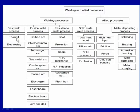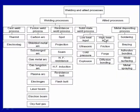Cast welding processes involve thermite welding and electroslag welding. Fusion weld processes include carbon arc, shielded metal arc, submerged arc, gas metal arc, gas tungsten arc, plasma arc, electrogas, laser beam, electron beam, and oxy-fuel gas welding. Resistance welding processes include spot welding, projection welding, seam welding, high frequency resistance, high frequency induction, resistance butt, and flash butt welding. Solid state weld processes are divided into low heat input — ultrasonic, cold pressure, and explosion welding — and high heat input — friction, friction stir, forge welding, and diffusion bonding.